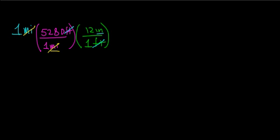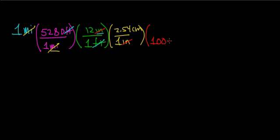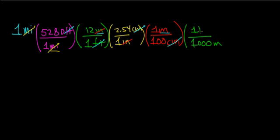Now I'm going to multiply by the fundamental unit that bridges the SI system and the English system: one inch equals 2.54 centimeters. Notice that the unit of inches cancels. Then I multiply by 100 centimeters equals one meter — the unit of centimeters cancels. Finally, I convert from meters to kilometers using 1,000 meters equals one kilometer. After canceling all the appropriate units, I'm left with units of kilometers, completing the conversion from miles to kilometers.